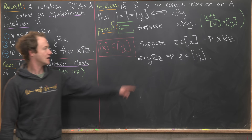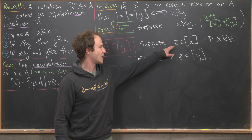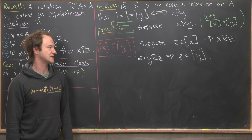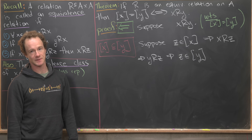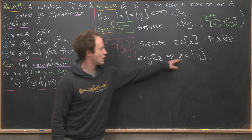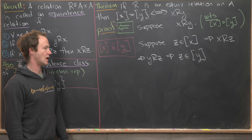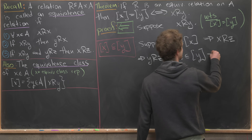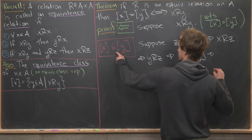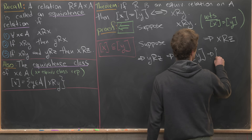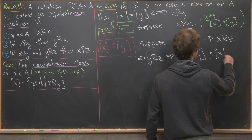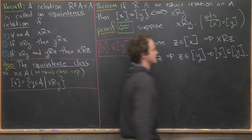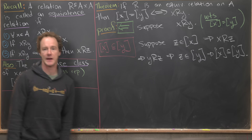We took an arbitrary element from the equivalence class of X and showed it was in the equivalence class of Y. That means we have finished showing the equivalence class of X is a subset of the equivalence class of Y.